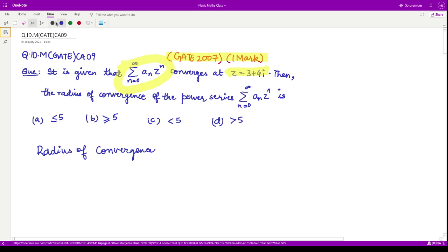A power series of this form summation n varying from 0 to infinity a_n z minus 0 raised to power n converges if the modulus of the z terms with the point about which it is defined - so here it is defined about the point 0 - if you take the modulus of this thing, this should be less than equal to some quantity called r. This r is called the radius of convergence.